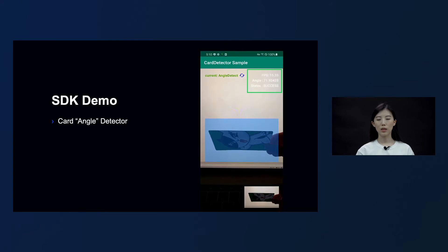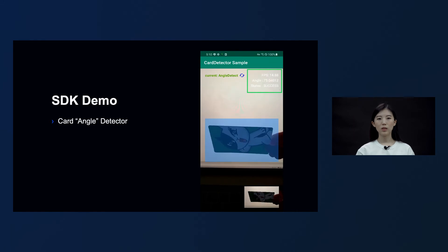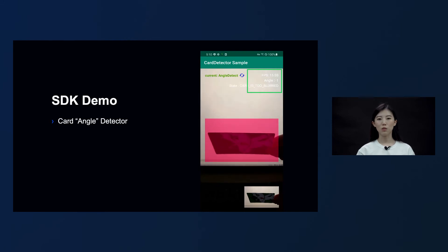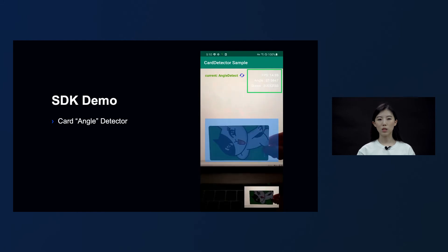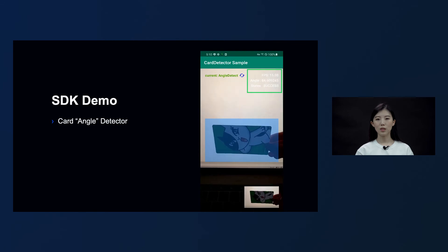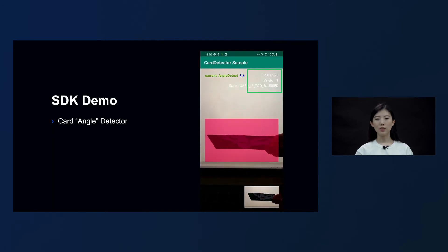I will also provide an additional explanation about the card angle detector as we view a sample from the card detector SDK in motion. The client side sends the image of the screen and the frame of the target detection area to the card angle detector in the SDK. The card angle detector analyzes the series of images in the target frame to detect the angle and passes the detected angle and the image at the point of detection to the client side. In the video, when an angle is detected the background of the target detection area frame turns blue, and red when not detected. On the top right corner you can see the angle information passed on from the card angle detector.